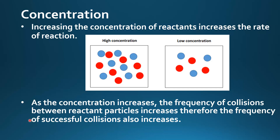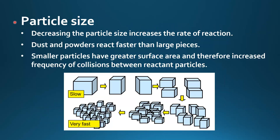Particle size: decreasing the particle size increases the rate of reaction. Dusts and powders react faster than large pieces because smaller particles have greater surface area, and therefore an increased frequency of collisions between reactant particles. Here we can see the effect of decreasing the particle size — large pieces react slowly, and as we increase the surface area by decreasing the particle size, we end up with a powder which has a very fast rate of reaction.